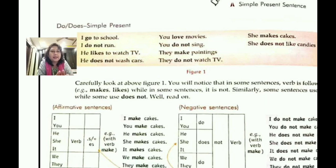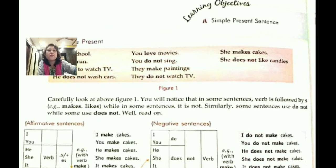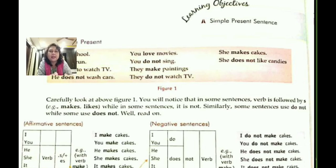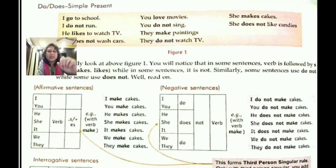'They make paintings,' 'They do not watch TV,' 'She makes cakes,' 'She does not like candies.' Looking carefully at these examples, you will notice that in some sentences the verb is followed by 's' — such as 'makes' and 'likes' — while in others it is not. Similarly, in some sentences we use 'do not' and in others 'does not.'